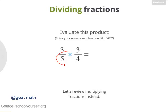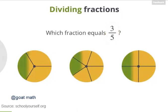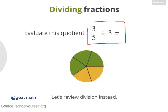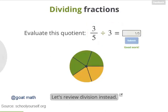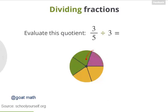Exactly! You can multiply the numerators and denominators to get an answer of 9 twentieths. Next, let's take a closer look at 3 fifths. Which of these green regions here represents 3 fifths? Right! This green region is 3 fifths of the circle. Now suppose you were to take this green region and divide it into 3 equal parts. What fraction of the circle would you have? In other words, what's 3 fifths divided by 3? Excellent! So 3 fifths divided by 3 equals 1 fifth.